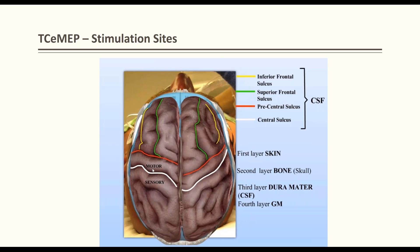If the electrode is correctly placed on the motor gyrus, you can obtain MEP responses at less than 150–200 volts with minimal patient movement. C1/C2 placements can also be very helpful. Proper head measurement allows good MEP responses with low stimulation.